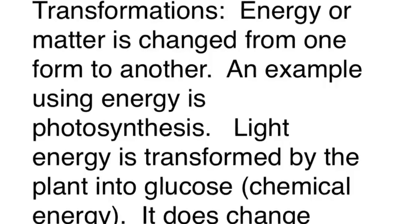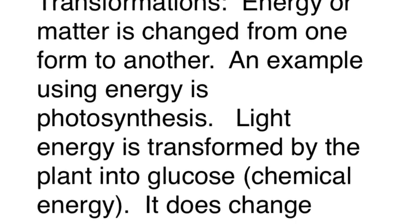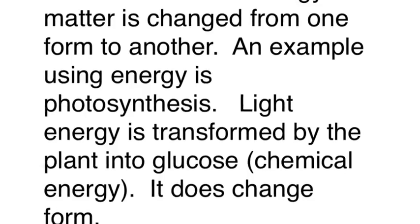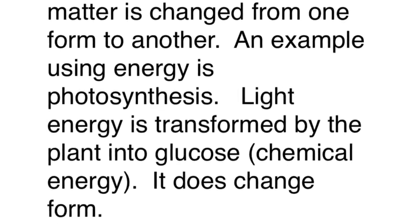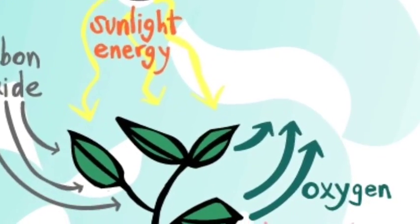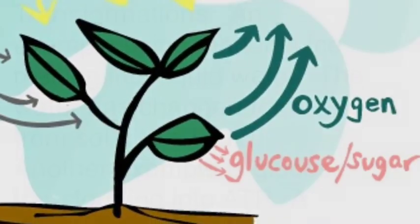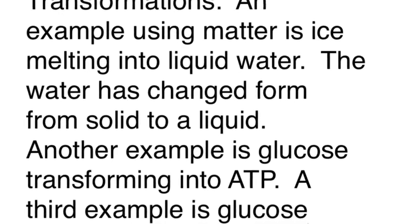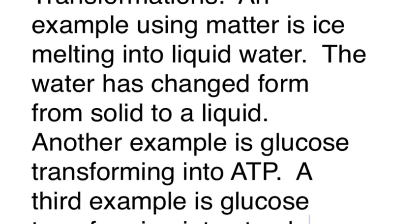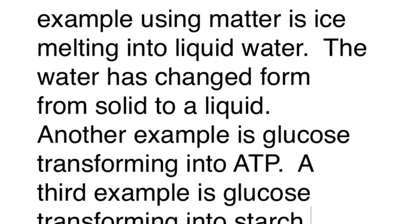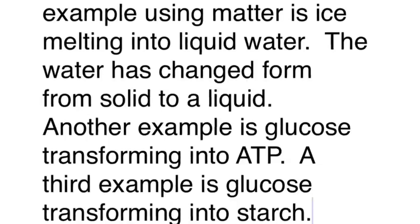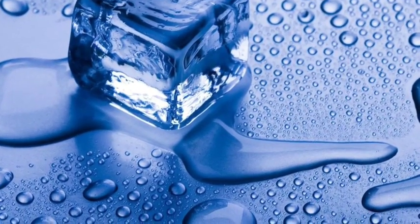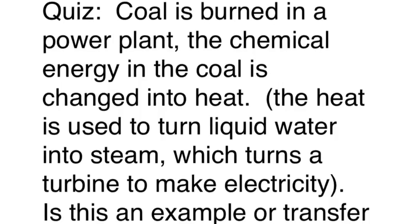By contrast, you have transformations — energy or matter that changes from one form to another. An example using energy is photosynthesis: light energy is transformed by the plant into glucose, which is chemical energy. The sunlight hits the plant and the plant actually transforms it, physically changing it into glucose. Using matter as an example instead of energy would be ice melting into water. They're both technically water, but one's solid and one's liquid — it's changed state. Other examples include glucose changing to ATP, glucose changing into starch, or starch changing into fat. All of those are transformations.